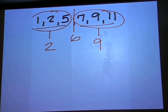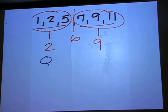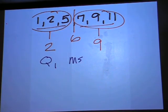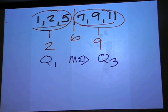So this one would be quartile 1. This would be the median, also known as quartile 2, usually just the median. And then the 9 is quartile 3.